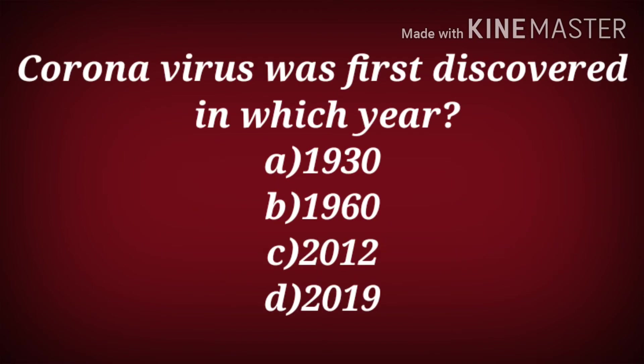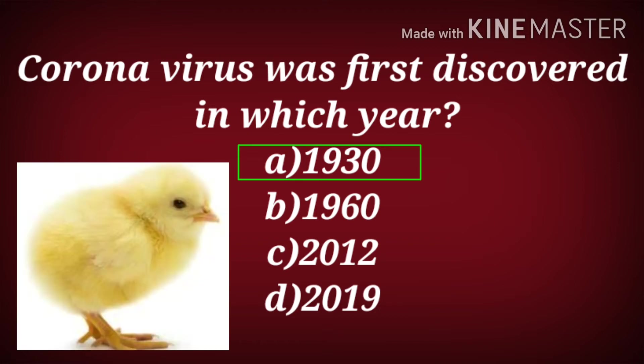Coronavirus was first discovered in which year? Was it in 1930, 1960, 2012, or 2019? The correct answer is 1930, and it was first discovered from a chick.